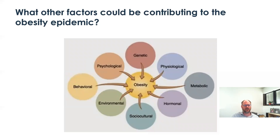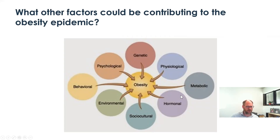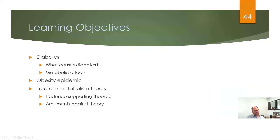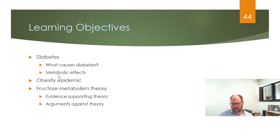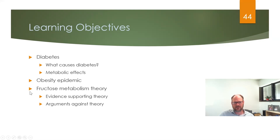Fructose is only one possible contributor to a variety of factors that include behavioral, psychological, genetic, physiological, metabolic, hormonal, social, economic, cultural, and environmental conditions that all ultimately contribute to obesity. To wrap up: the main take-home lessons for today are to understand what diabetes is, the different types of diabetes and what causes them, and how diabetes is linked to the obesity epidemic. We also described the fructose metabolism theory and how it is possibly linked to the obesity epidemic, along with evidence for and against this theory.